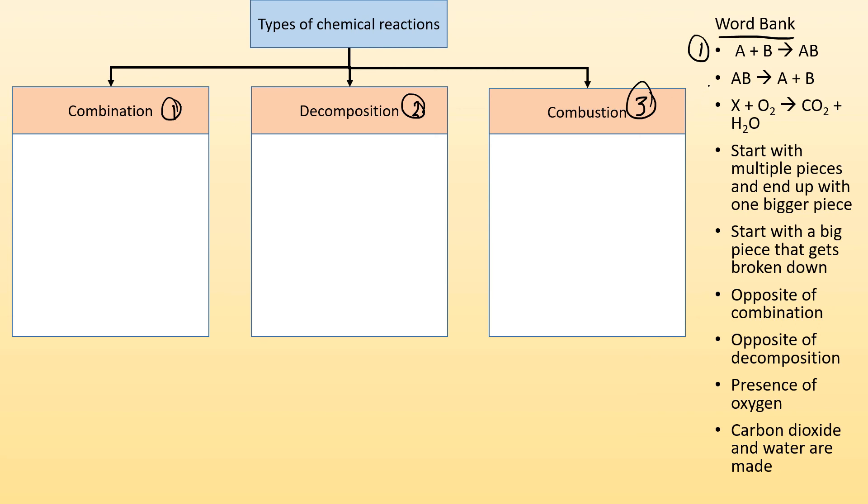AB breaking down into A plus B is a decomposition reaction so it's going to go in that second box. This third one is combustion. We have some compound reacting with oxygen giving me carbon dioxide and water, so that's combustion.